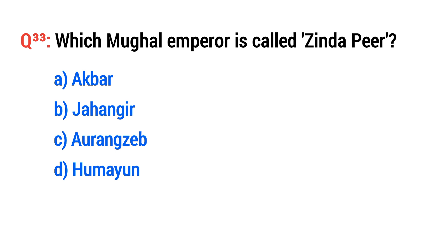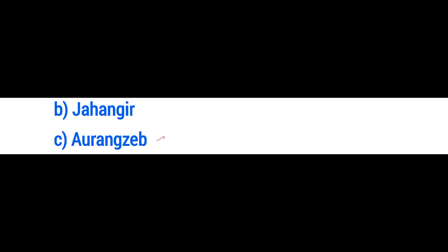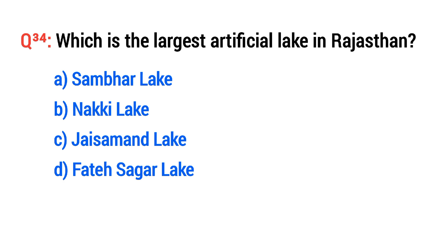Question thirty-three: Which Mughal emperor is called Zinda Pir? The right option is C: Aurangzeb. Question thirty-four: Which is the largest artificial lake in Rajasthan?